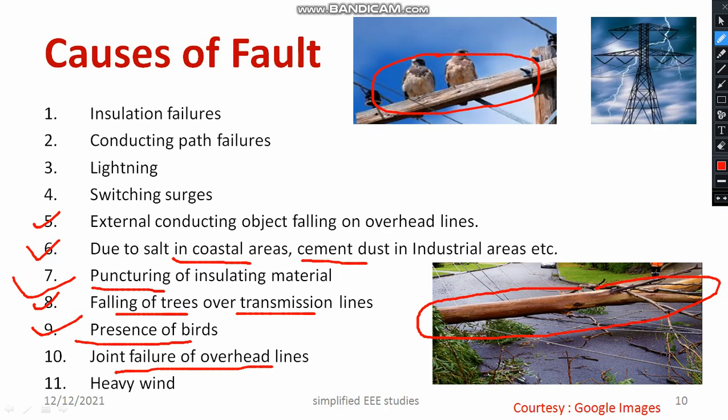Joint failure of overhead lines is another cause. You can see different types of joints, such as T-joints, in overhead lines. If a joint fails, it will cause breaking of the conductor. Heavy wind is also going to create issues — a pole can fall down due to heavy wind, and once the pole falls, the lines will also fall to the ground.